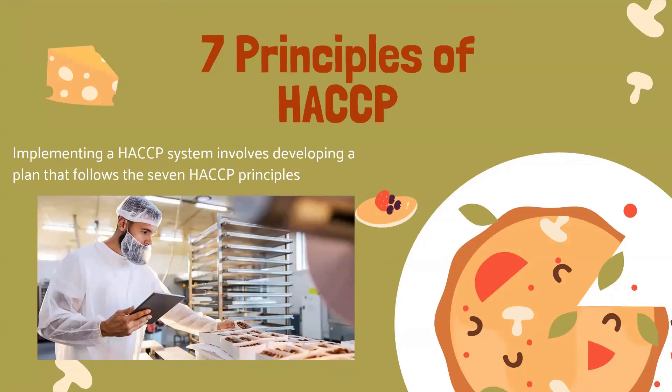HACCP is a food safety management system that aims to proactively identify food safety hazards and develop steps to reduce or eliminate potential hazards from food production to food consumption. Implementing a HACCP system involves developing a plan that follows the seven HACCP principles, which are as follows.